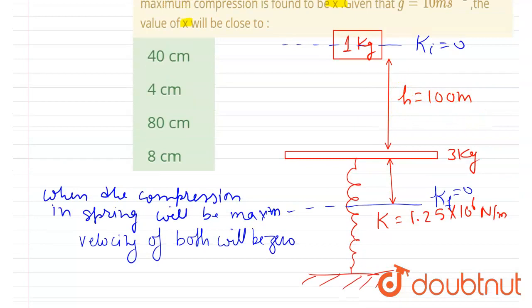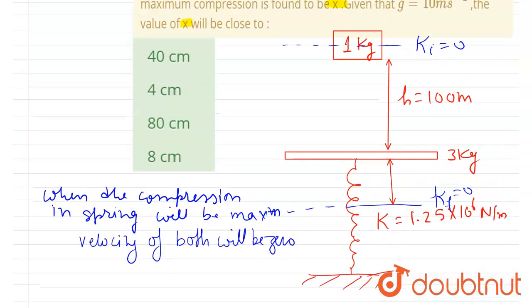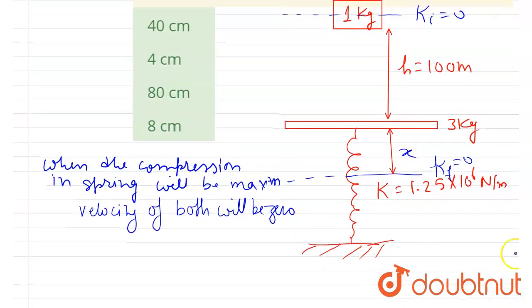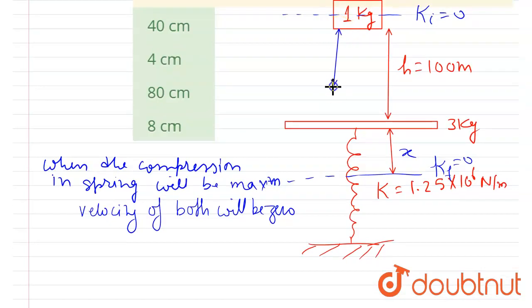Then what will happen to the gravitational potential energy? The gravitational potential energy will get converted into the spring potential energy. Right? If you see here, they both come downward with some height. This block came h + x height, and this platform came x height downward. So this height is h + x.